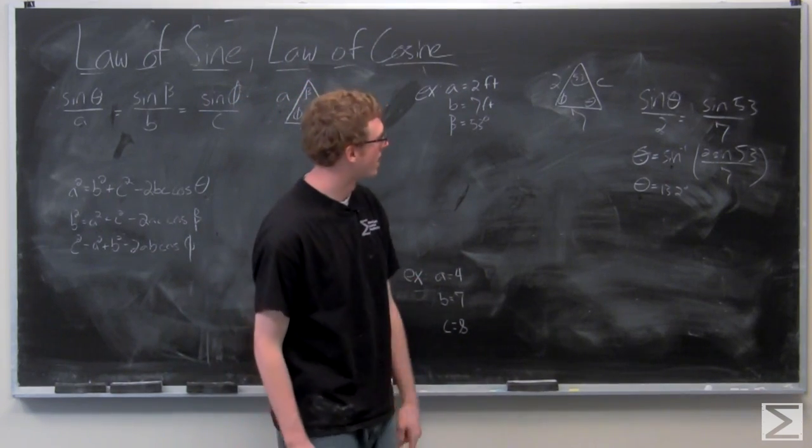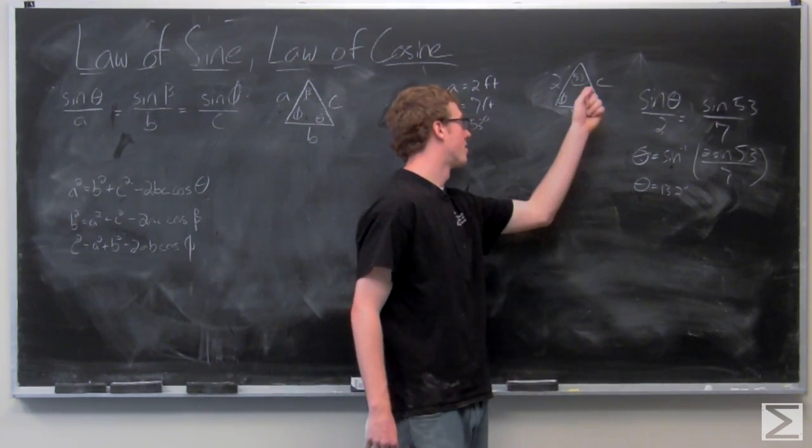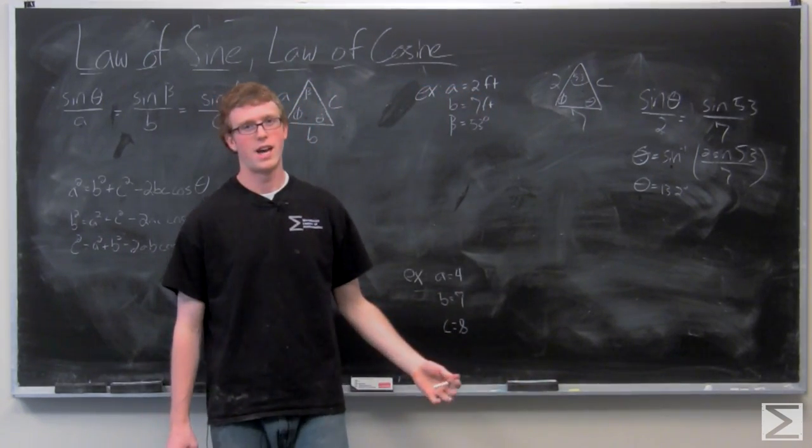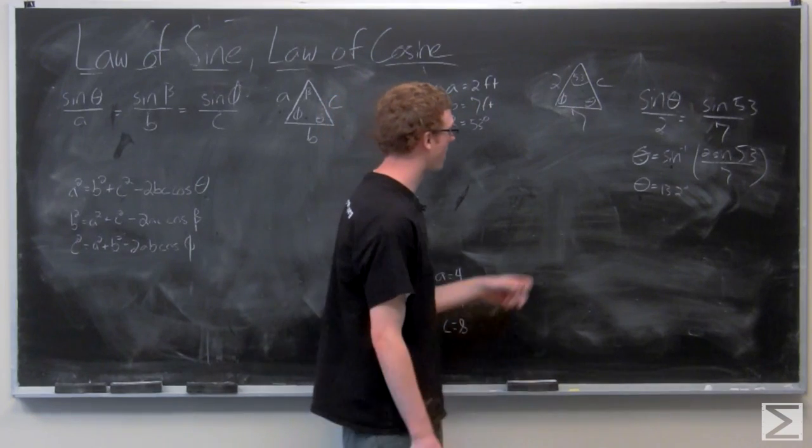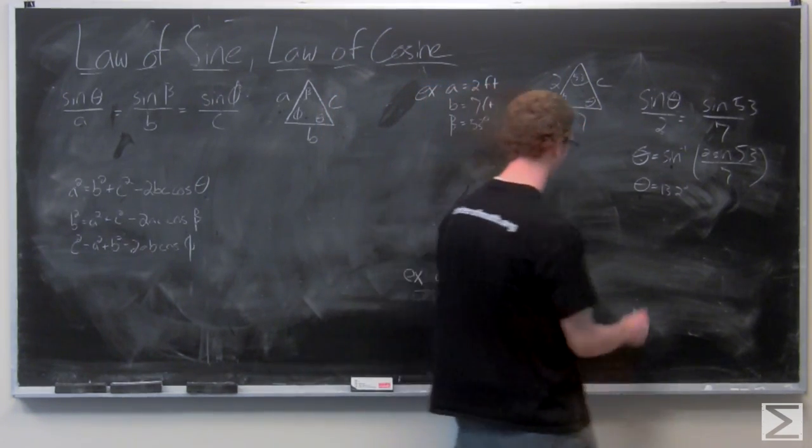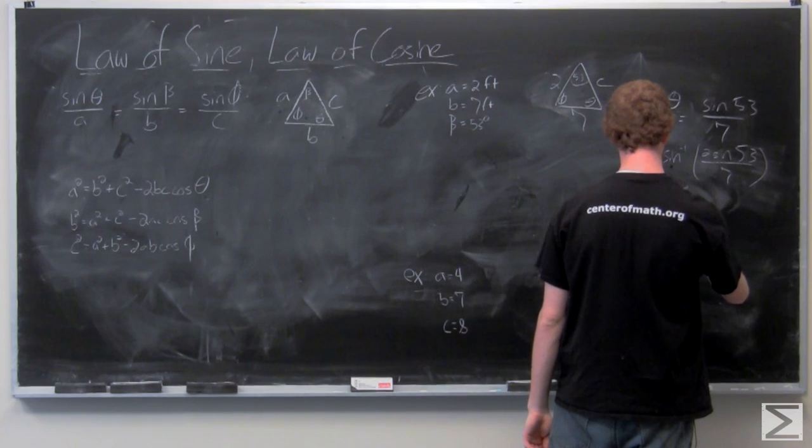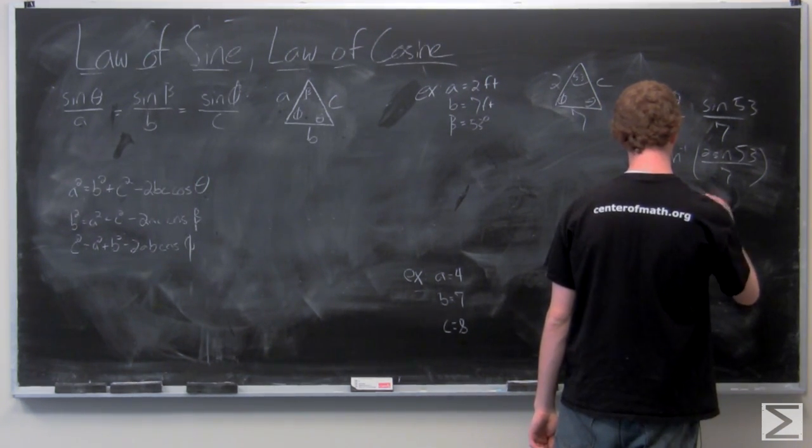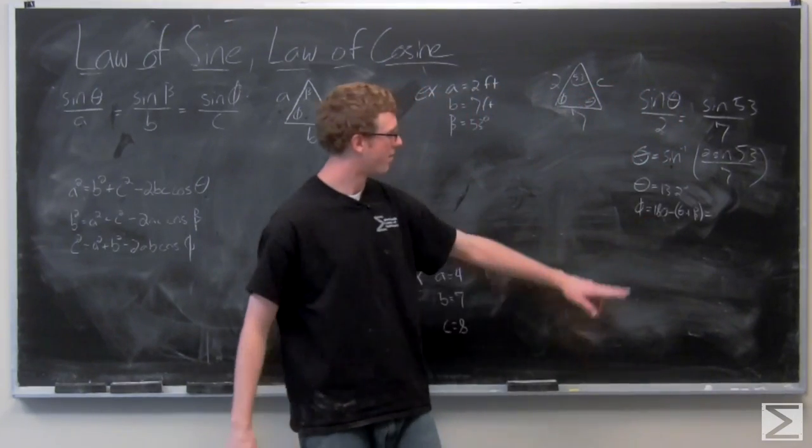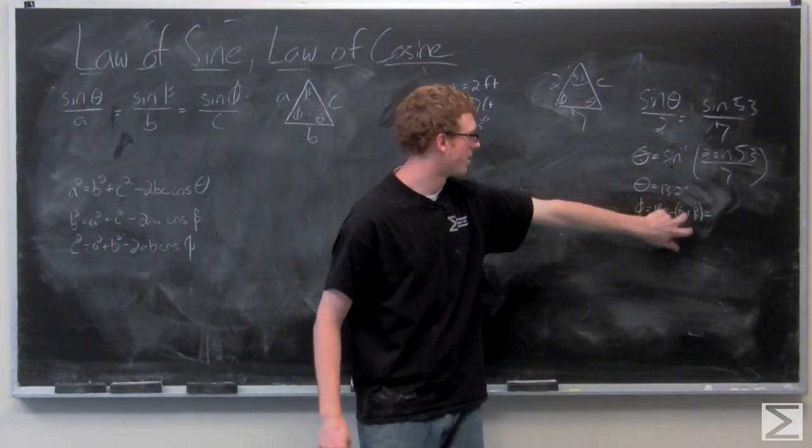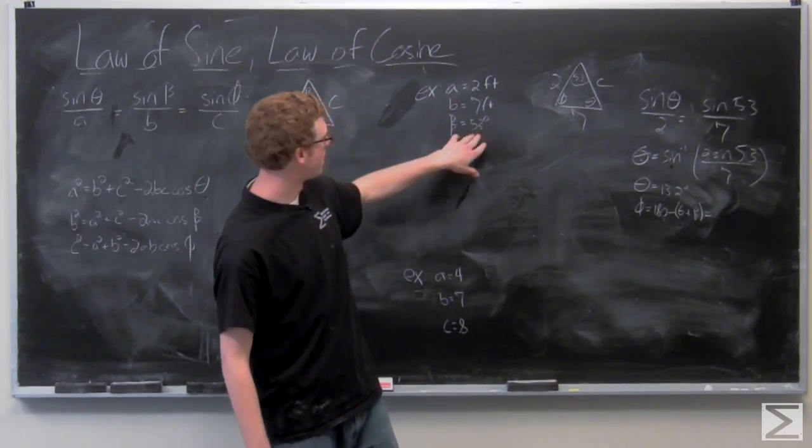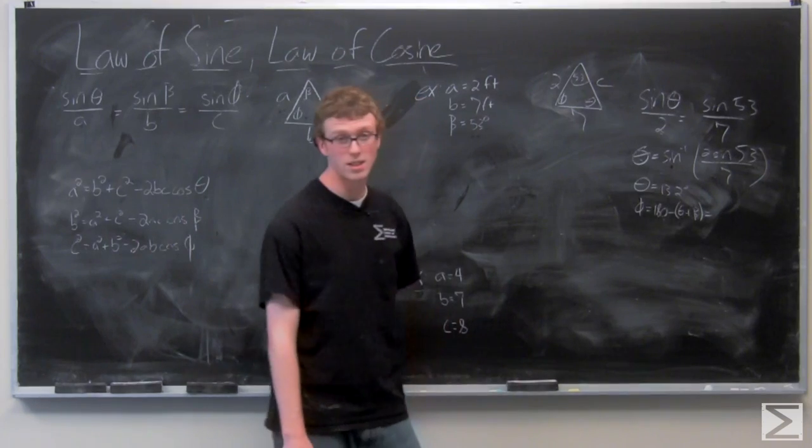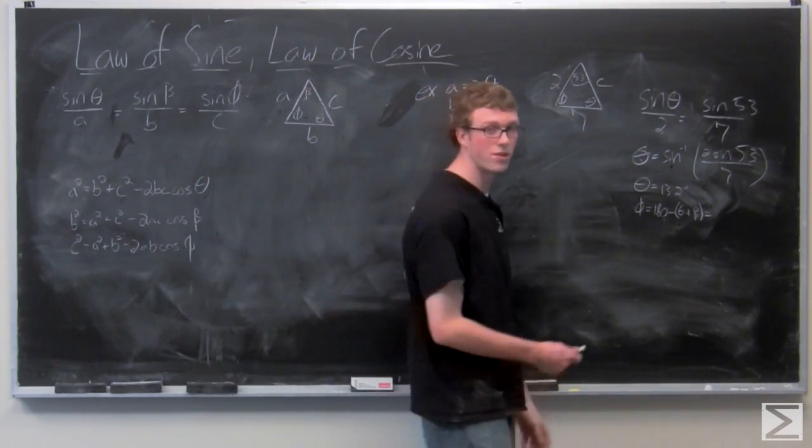So now that we have two angles of the triangle, theta equals 13.2 and beta equals 53 degrees, we just add them together and subtract from 180 to find this angle phi. 180 minus theta, which is 13.2 plus beta, which is 53 degrees. So it's 180 minus 66.2 degrees. And that angle is 113.8 degrees.